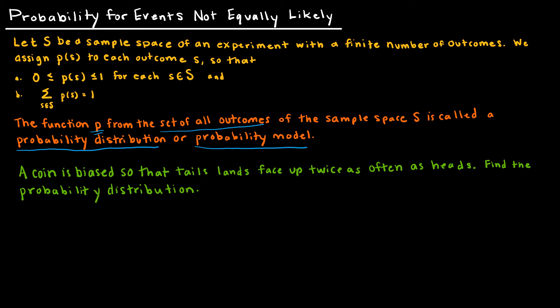Let's look at our first example. A coin is biased so that tails lands face up twice as often as heads. Find the probability distribution. We're saying the probability of tails is equal to 2 times the probability of heads, because tails lands up twice as often as heads.